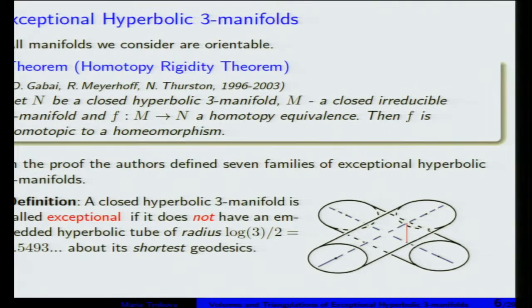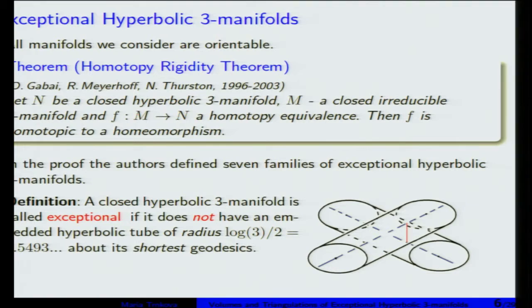What is the definition? If we take a closed three-manifold and consider the shortest geodesic and an embedded tube around this geodesic, then we have an injectivity radius of this geodesic. They observed that there are some manifolds that don't have an embedded tube of thick radius, and there is this number log 3 over 2. If there is no thick tube geodesic around the shortest geodesic, then it's called exceptional. Here we have two pre-images of the same geodesic in the universal cover — the blue lines are the two pre-images, and the red line is the shortest ortho-curve between them, and half of this shortest ortho-curve is the radius.